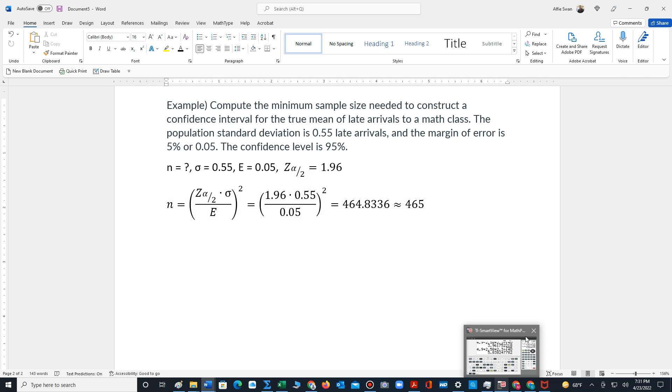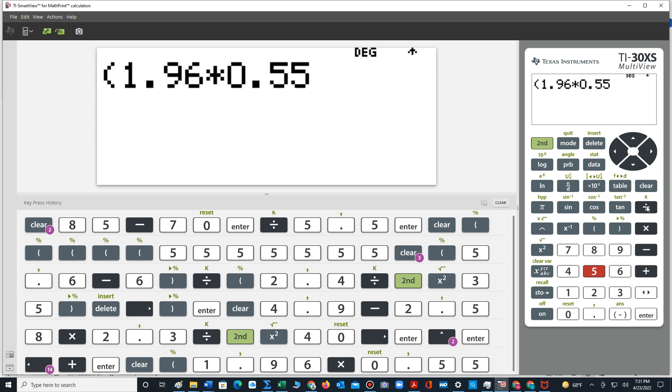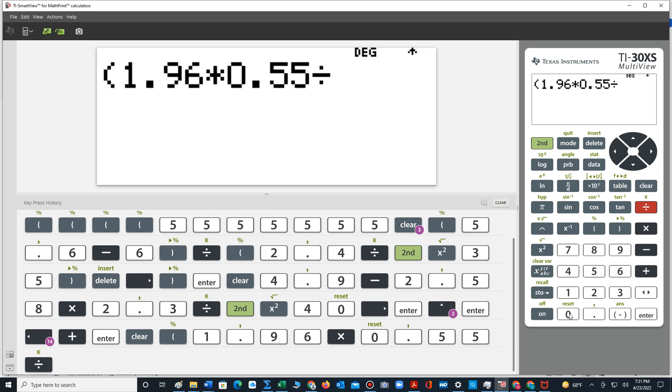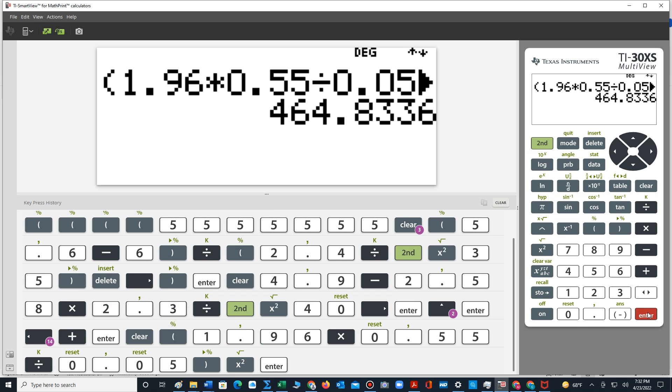Let's compute that using a scientific calculator. So we have 1.96 times 0.55 divided by 0.05. I close the parentheses and select the squared button. Hit enter. We have 464.8336.